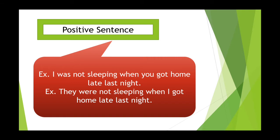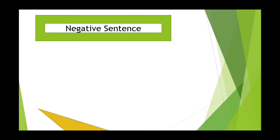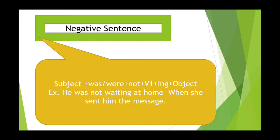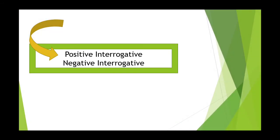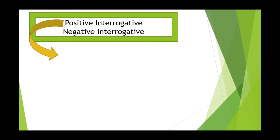To make a negative sentence, we use: subject + was/were + not + first form verb + ing + object. For example: 'He wasn't waiting at home when she sent the message.' Here you can check — we use past continuous tense with a clause that is in simple past tense. 'He' is singular, so we use 'was' + not + first form verb + ing.